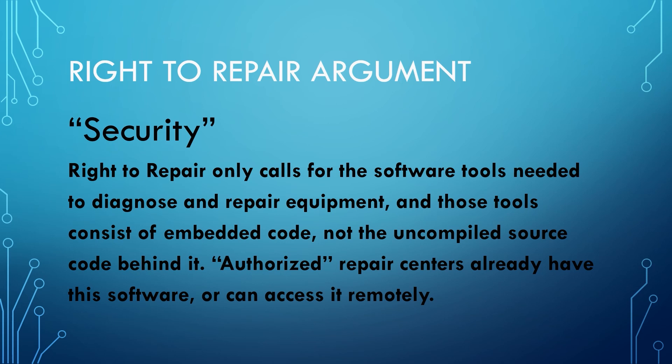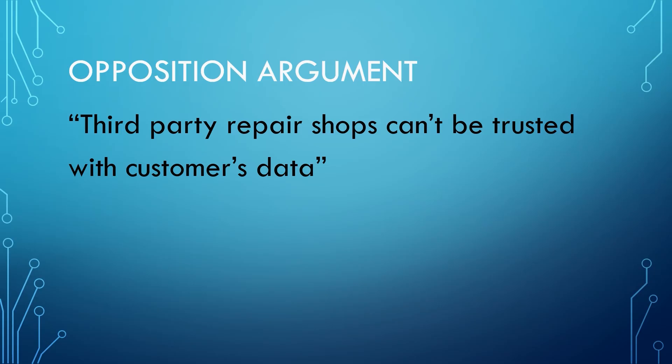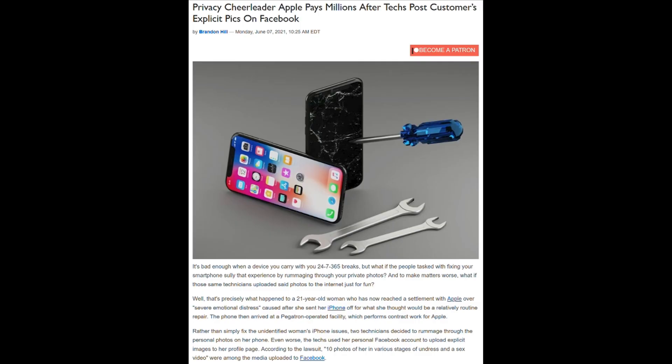Authorized repair centers already have this software or can access it remotely. Right to repair proponents also like to remind manufacturers that serialization does not equal security. Preventing a phone screen from working on the same exact phone is not a security concern. Preventing a sensor from being installed in a tractor is not a security concern. Another argument the opposition uses against right to repair is that third-party repair shops can't be trusted with customers' data.